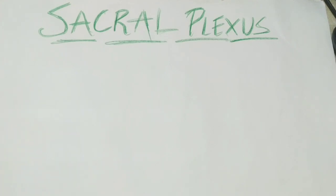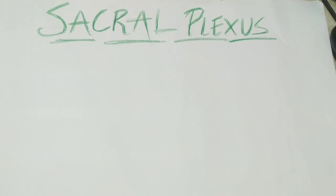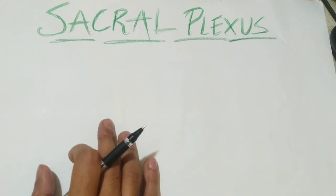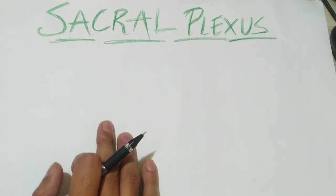The sacral plexus is located around the piriformis muscle, around the level of the posterior abdominal wall. The spinal nerve roots for the sacral plexus are from L4 to S4. L4 and L5 form the lumbosacral trunk, and S1 to S4 are the actual spinal nerve contributions to the sacral plexus.